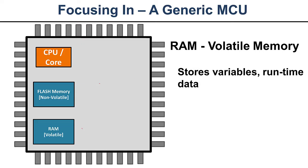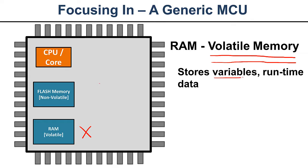The other piece we see in a microcontroller is random access memory, or volatile memory. This is memory that goes away when you remove power. It's used to store variables and any sort of runtime data — anything that may change throughout the course of executing your program. For example, if you're sampling sensor data and want to keep a record for averaging, or if you have data coming in over a serial port or communications bus that you need to store — those are good examples of runtime data.